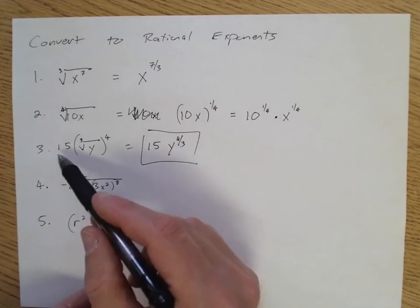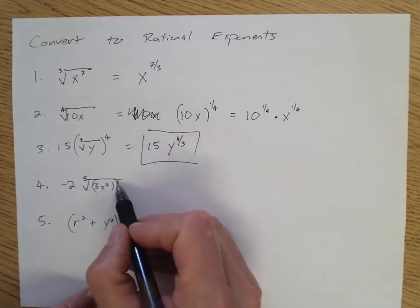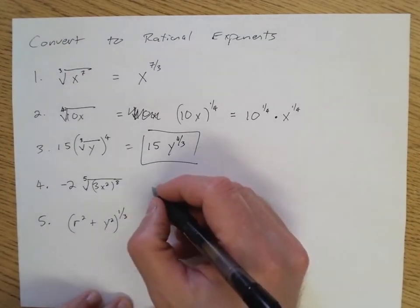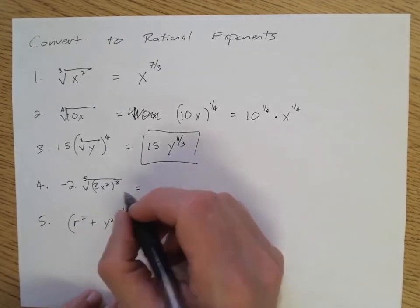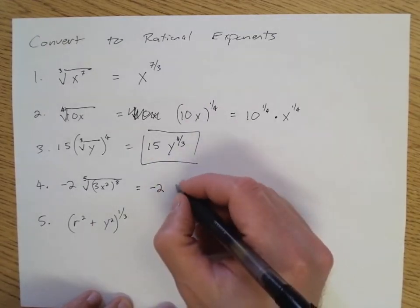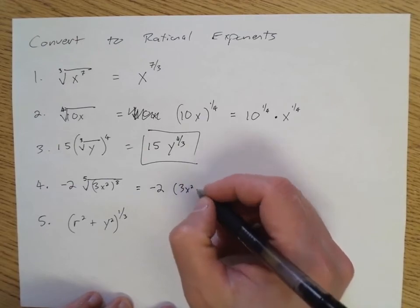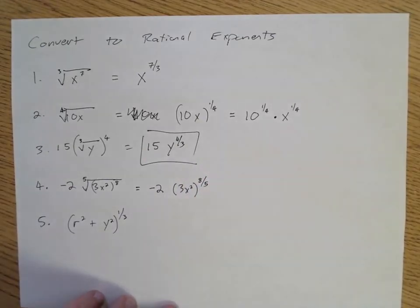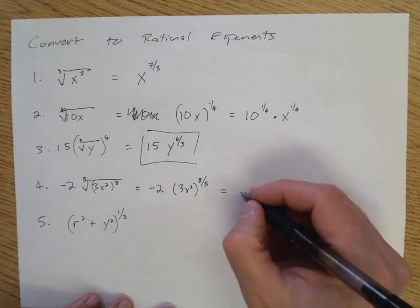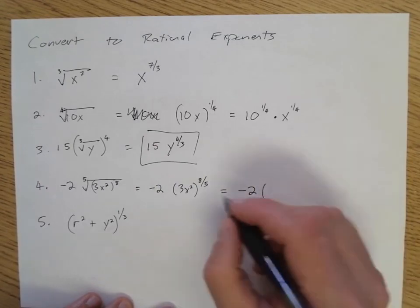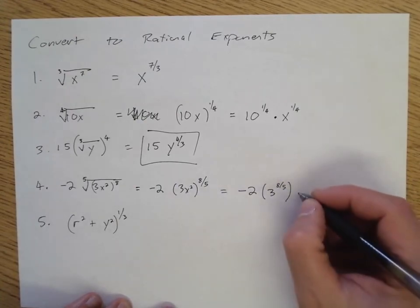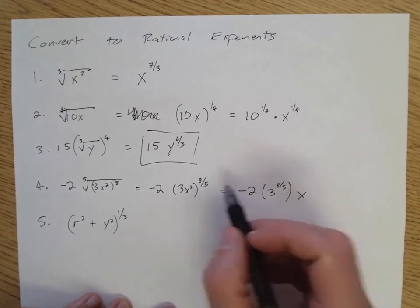Number four is similar to number three. I want to go ahead and change the fifth root to the power of one-fifth, so I have negative two times, in parentheses, 3x squared, to the power of eight-fifths — the fifth root is one-fifth, and one-fifth times eight is eight-fifths. Taking this further: negative two times three to the power of eight-fifths, and then x to the power of 16-fifths, multiplying the exponents.